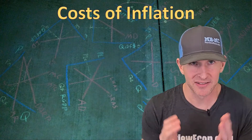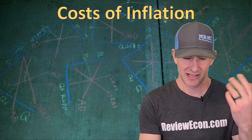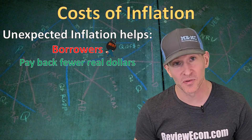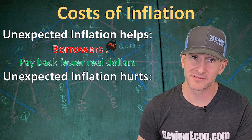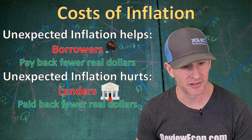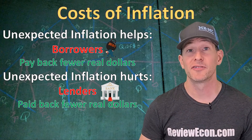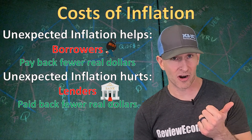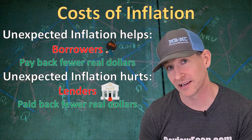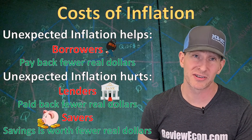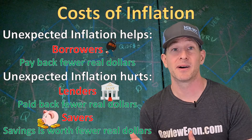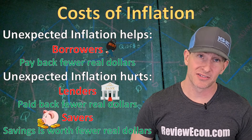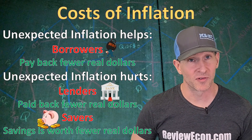Inflation isn't bad for everyone. Unexpected inflation actually helps borrowers because they pay back fewer real dollars. That same unexpected inflation hurts lenders or banks because they are paid back fewer real dollars. You can learn more about this through the Fisher formula in a future unit. Unexpected inflation also hurts savers, because the money they've set aside will be worth fewer real dollars over time, since those dollars have less purchasing power.